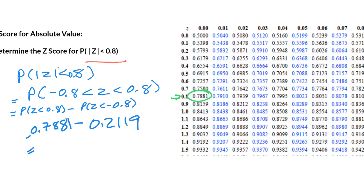So we have 0.7881 minus 0.2119 and that gives us a final answer of 0.761, which is approximately 58%. And that's it. We're done.